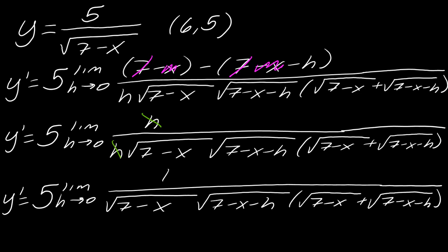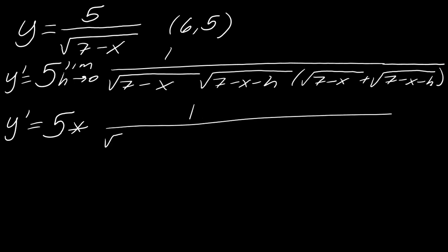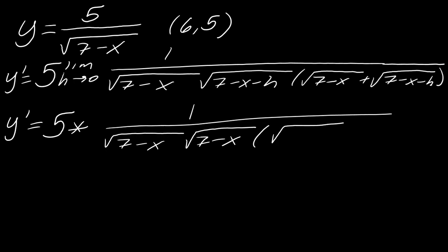Now that I've rearranged and simplified everything, what happens if I plug in h equals 0? I no longer have the problem where I have 0 over 0 and I don't have a 0 in the denominator. So I can go ahead and evaluate the limit. I'm going to drop the limit notation because now I can safely evaluate the limit. So this is going to be 5 times a big fraction — the square root of 7 minus x. When I plug h equals 0 into the other square root, I get the square root of 7 minus x again.